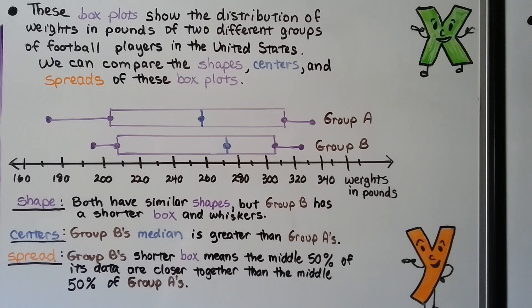For the spread, group B's shorter box means the middle 50% of its data are closer together than the middle 50% of group A's.